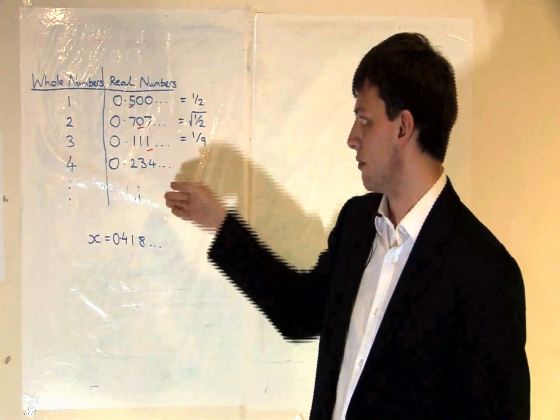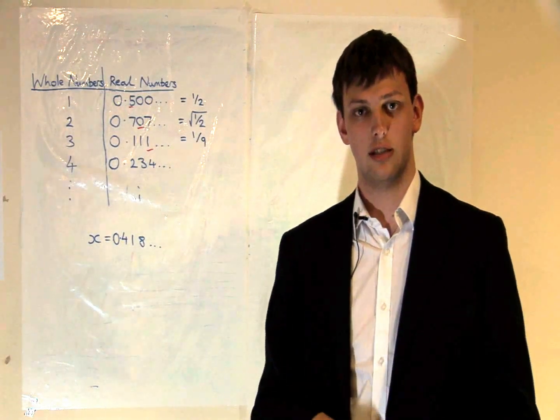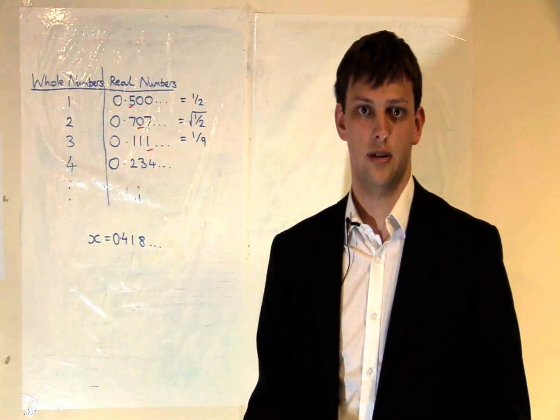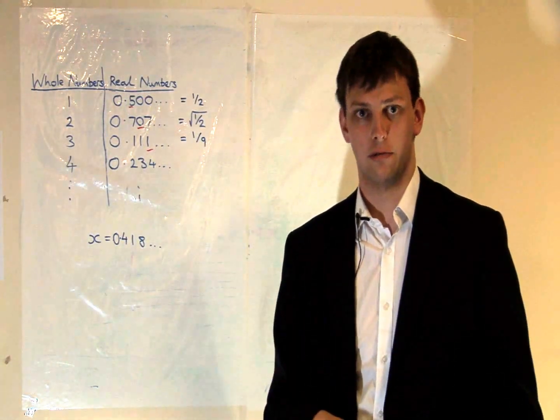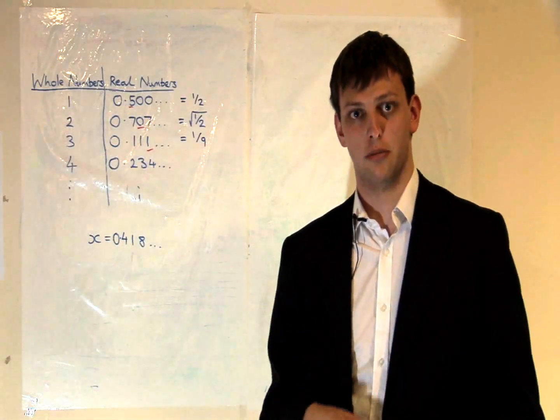Now x can't be any of the numbers in the right hand list because it always has at least one digit different to them, so our list didn't contain all the real numbers, so there must be more real numbers than whole numbers.